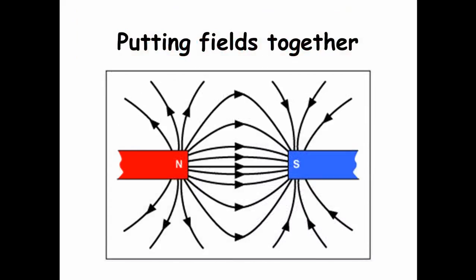Putting fields together. When you put a north and a south pole of two different magnets, you can see the actual field lines move from the north pole of one magnet to the south pole of the other.